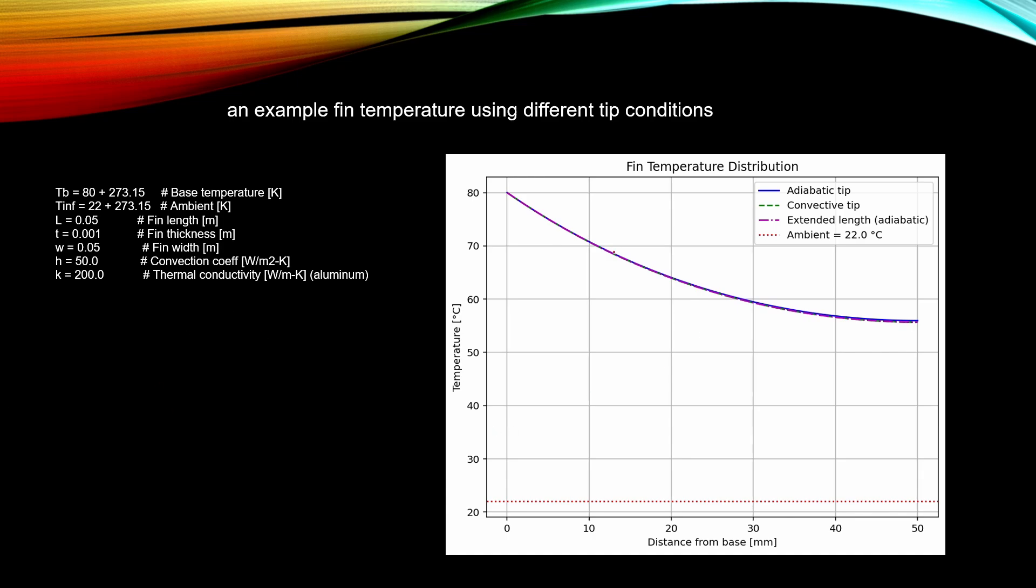I made an example calculation to see the effect of the tip conditions. In this case we have a base temperature 80 degrees C and the length of the fin is 50 millimeters. And there are three different tip conditions. We have adiabatic tip, convective tip and this adiabatic tip plus extended length. Seems that the temperature profile of the fin is almost exactly the same. So we can use this adiabatic tip condition and use this extended length.